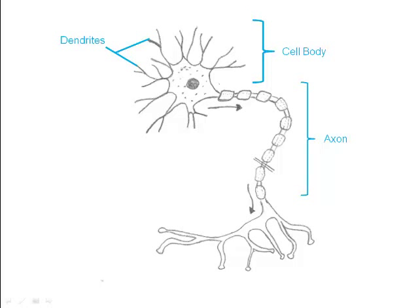Dendrites are branches off of the cell body. They receive impulses from other neurons or, in the case of sensory neurons, they receive stimuli. The more dendrites, the greater the number of connections that are possible with neighboring cells.